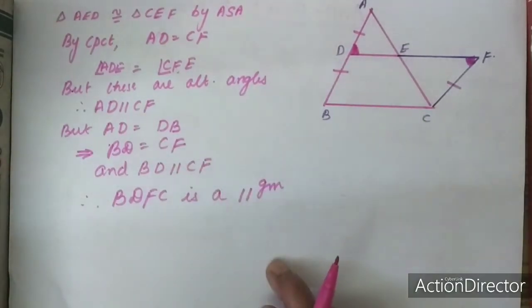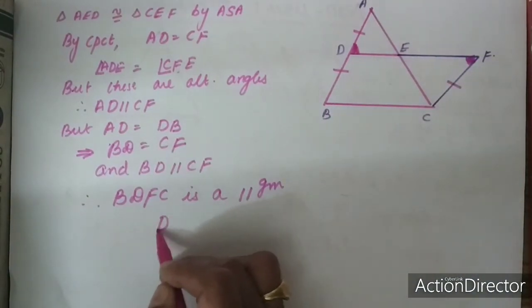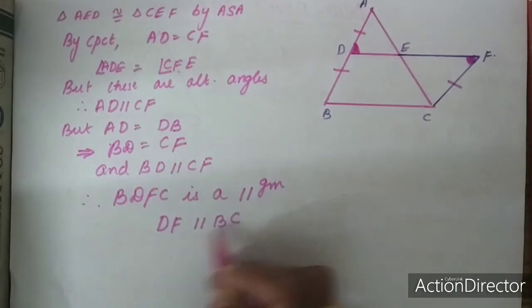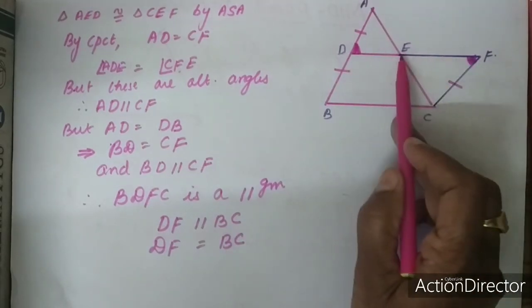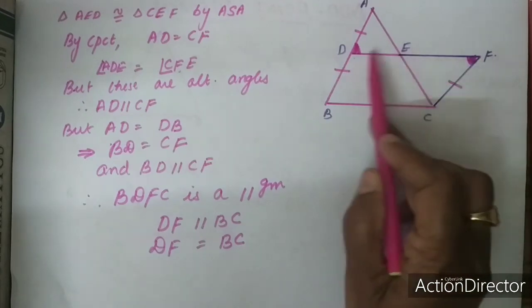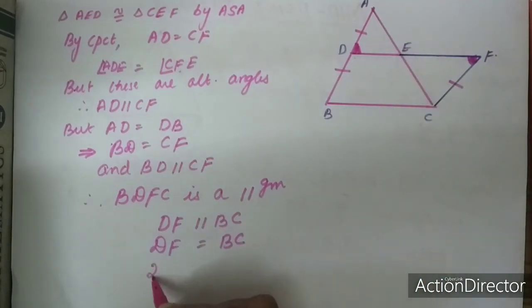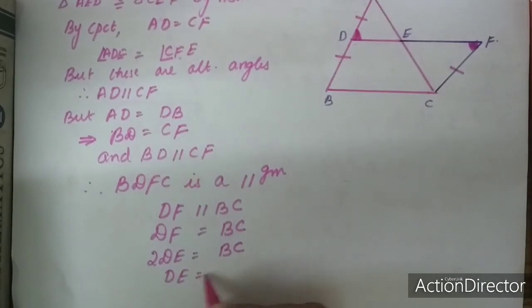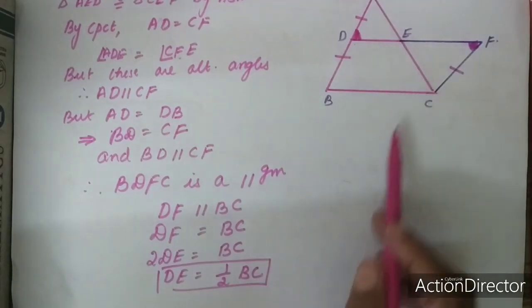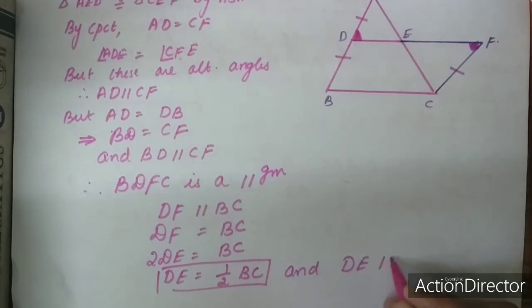In a parallelogram, opposite sides are equal. So DF is parallel to BC and DF is equal to BC. But since E is the midpoint and we extended DE to EF, we can write DF as 2 times DE. So 2 times DE is equal to BC, or DE is equal to half of BC. Hence, DE is equal to half of BC and DE is parallel to BC.